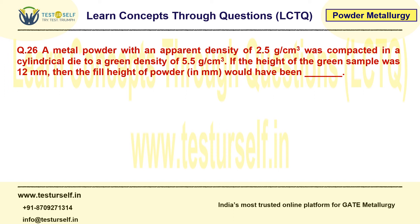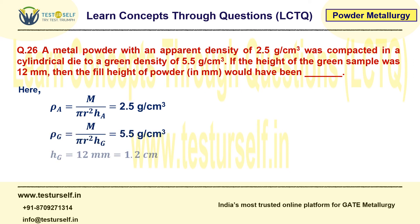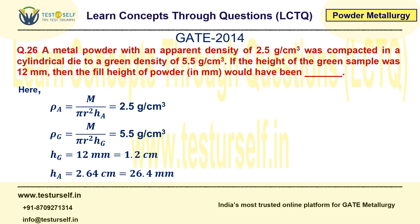Now we will see the solution. They have given rho_A (apparent density) and rho_G (green density), and H_G (height of the green compact). By comparing both masses and using the same approach, we can easily find H_A, the apparent (fill) height, which comes out to 2.64 cm — that is 26.4 mm, since the answer must be in mm. This was actually asked in 2014 as a 2-mark question — very easy marks to pick up.